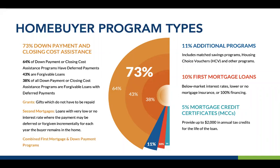We also track all affordable first mortgage loans — typically from your state housing finance agency or a local housing finance agency — as well as mortgage credit certificates, which are tax credits. We also track less common programs like housing choice vouchers, individual development accounts or matched savings programs, and employer assistance programs. So that's your breakdown of homebuyer assistance.